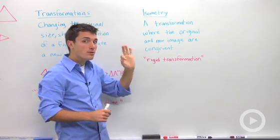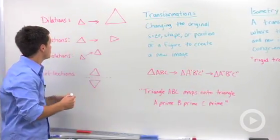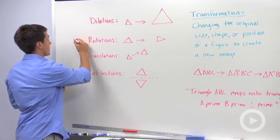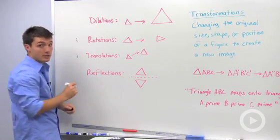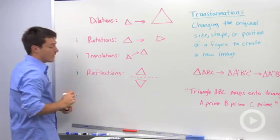So only three transformations are isometries. Rotations—I'm going to write an I—are isometries. Translations are isometries, and reflections.